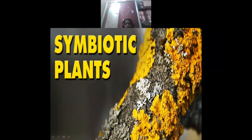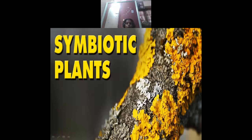Parasitic plants absorb nutrition from the host plants. But symbiotic plants share with each other. The yellow-colored plants are rich in nitrogen, so they are giving nitrogen to other plants.